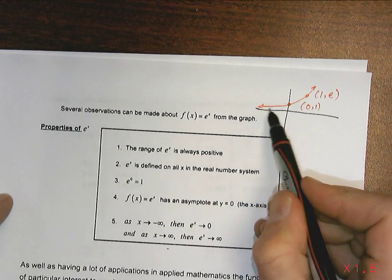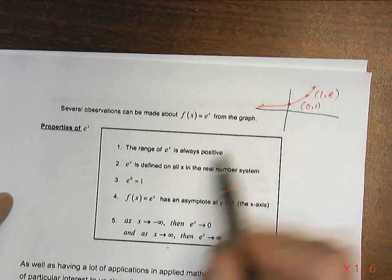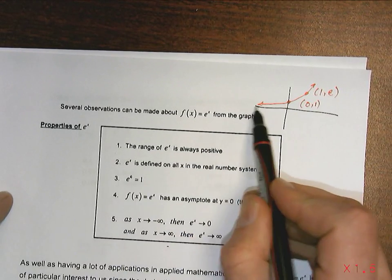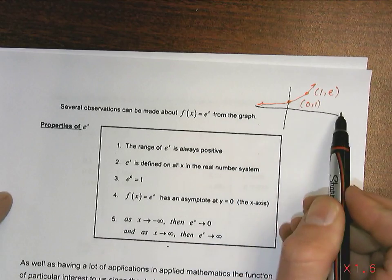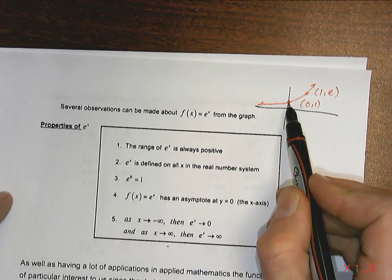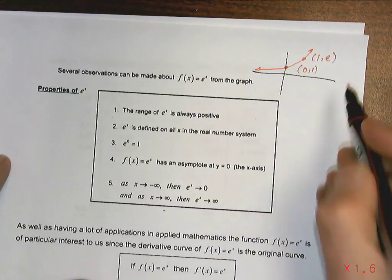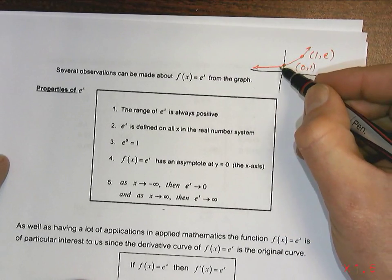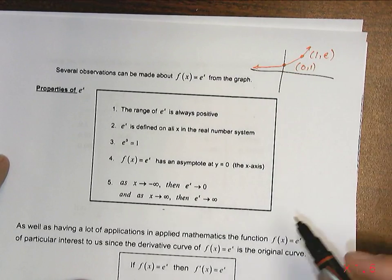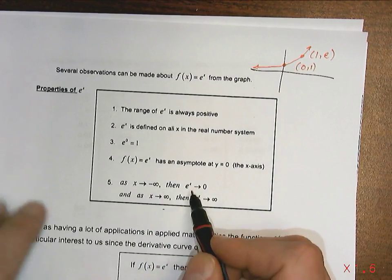Notice that the range of this is all positive. Notice that e to the x is defined on the entire domain. Notice that e to the 0 is 1. Notice that we have an asymptote here, that this function is coming closer and closer and closer, but never touching. And notice that it's an increasing function.